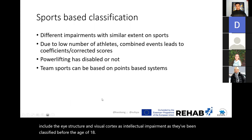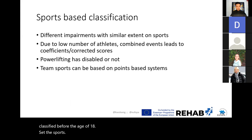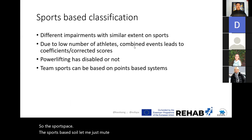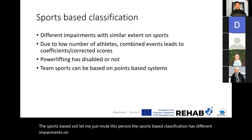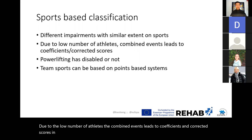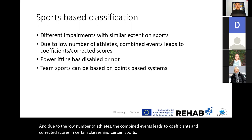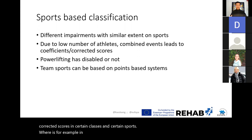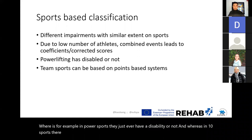Sports-based classification has different impairments on similar events. Due to the low number of athletes, combined events lead to coefficients and corrected scores in certain classes in certain sports. In power sports, athletes either have a disability or not, whereas in team sports they may be based on a points-based system.